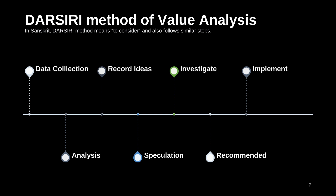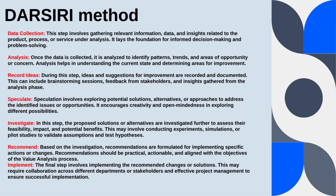Data collection — the process starts with gathering relevant data and information related to the problem under analysis, ensuring decisions are based on comprehensive and accurate information. Analysis — the collected data is analyzed to identify patterns, trends, and insights that inform decision-making and highlight areas for improvement. Record ideas — ideas, suggestions, and potential solutions that emerge during the analysis phase are documented, encouraging brainstorming and creativity. Speculate — exploring and considering various hypotheses, scenarios, and alternatives to address the problem, based on the analysis and recorded ideas.